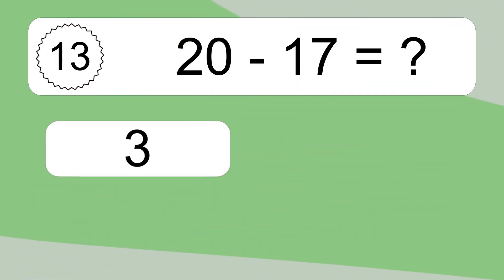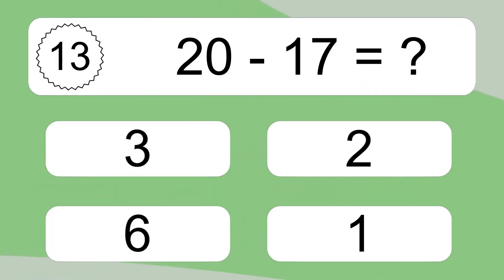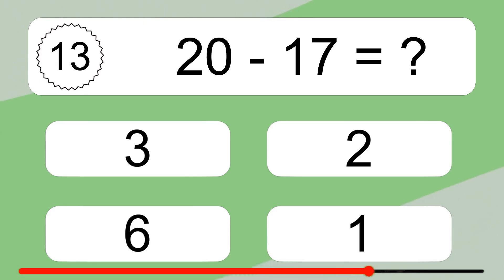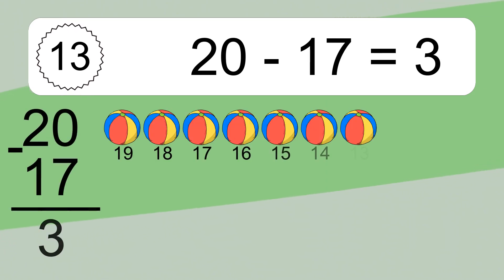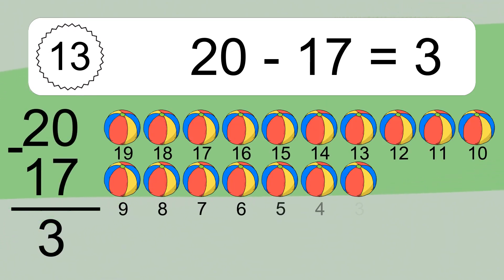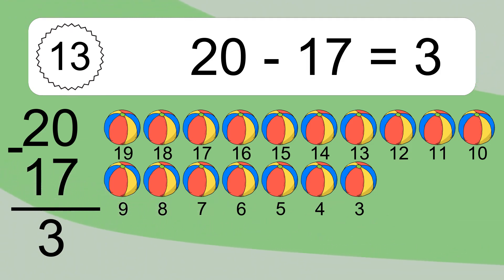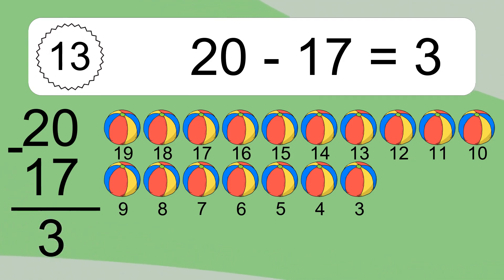20 minus 17 equals what? 20 minus 17 equals 3. Let's count it! 19, 18, 17, 16, 15, 14, 13, 12, 11, 10, 9, 8, 7, 6, 5, 4, 3.